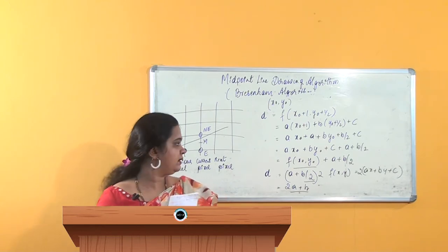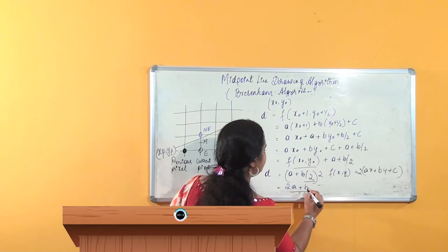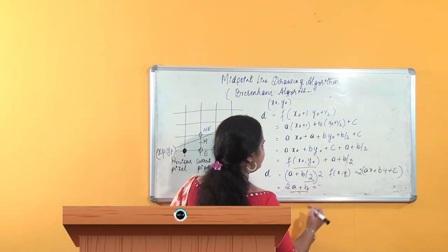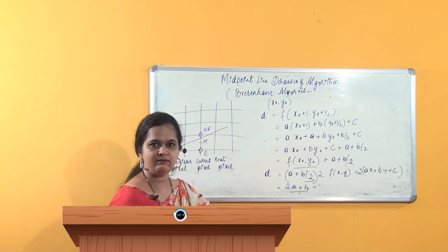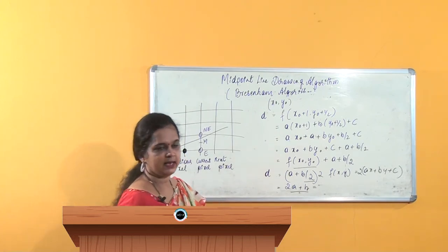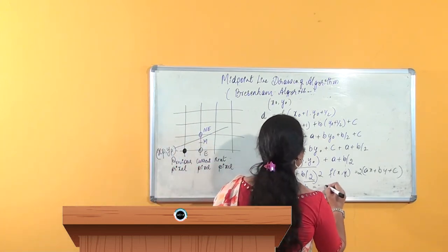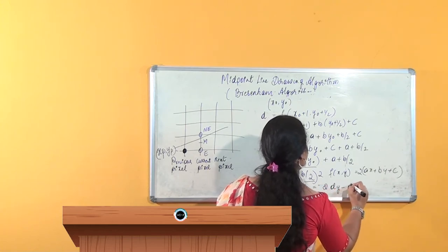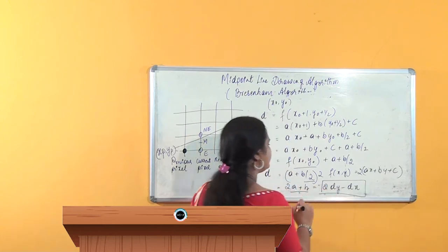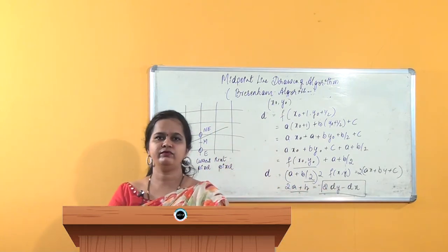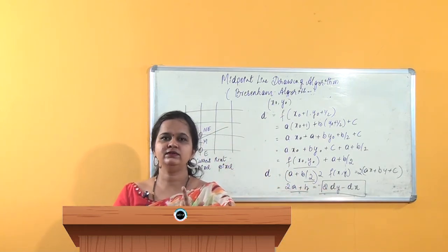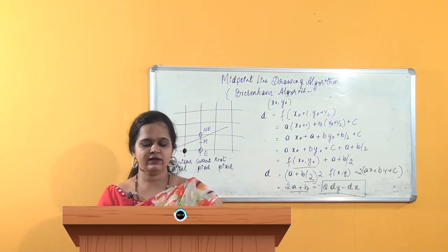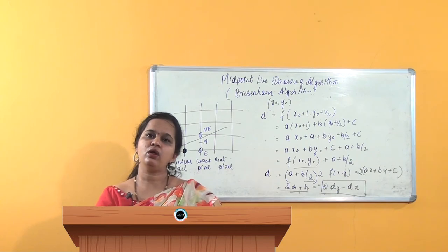The d_start now will be 2a plus b. We always know that a is dy and b is minus dx, and therefore d_start will be 2dy minus dx. This is the d_start. So d_start is what we know now, and the change in NE we know, and the change in E we know. Using all this, we will have to write an algorithm now.